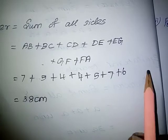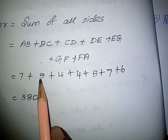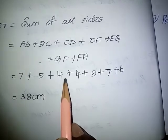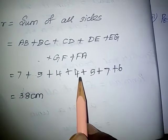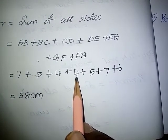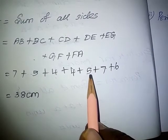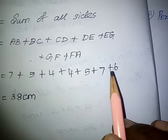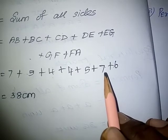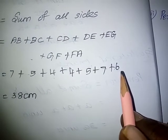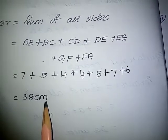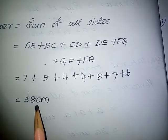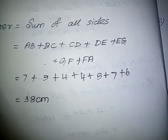AB is 7 cm, BC is 5 cm, CD is 4 cm, DE is 4 cm, EG is 5 cm, GF is 7 cm, and FA is 6 cm. Adding all sides: 7 plus 5 is 12, 12 plus 4 is 16, 16 plus 4 is 20, 20 plus 5 is 25, 25 plus 7 is 32, 32 plus 6 is 38. So, the perimeter of the given figure is 38 cm.